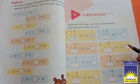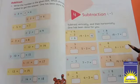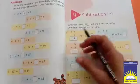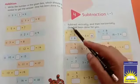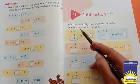We're going to subtract numbers vertically and then horizontally. One has been done for you. You have to solve the subtraction both ways - vertically and horizontally.